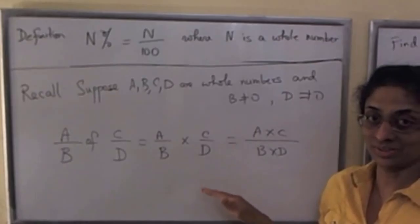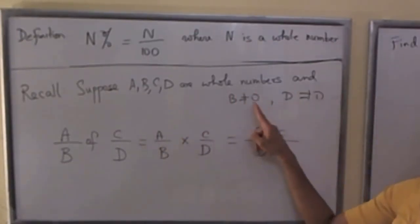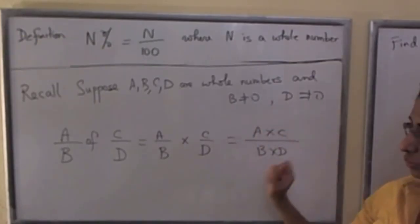Here's something we discussed in a video on fractions. Suppose A, B, C, D are whole numbers and B is not equal to 0, D is not equal to 0.